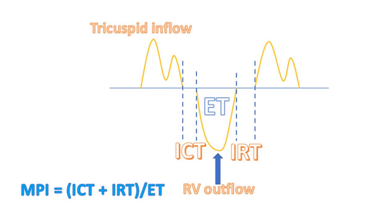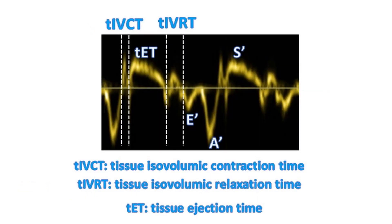ICT is isovolumic contraction time, IRT is isovolumic relaxation time, and ET is ejection time. Tei index can also be measured indirectly from tissue Doppler and is designated as TMPI.